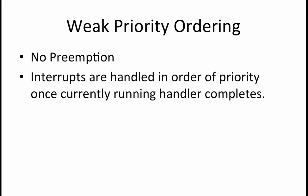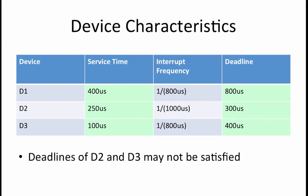If there is a weak priority ordering that satisfies our system, then we should determine the priority ordering. If there is no such ordering, then we should identify the devices for which a weak priority ordering cannot guarantee meeting all the constraints. Returning to our device characteristics table and comparing our deadlines to the device service times, we see that in a weak priority system, if the D1 handler, which has a service time of 400 microseconds, happens to be running when a D2 or D3 interrupt arrives, then D2 or D3 could miss their deadlines, because the service time of D1 plus their own service time is greater than their deadline. If D2 or D3 have to wait up to 400 microseconds before beginning to be serviced, then their completion time won't be until 650 microseconds for D2, which is greater than its deadline of 300 microseconds, and 500 microseconds for D3, which is greater than its deadline of 400 microseconds.